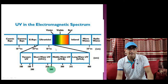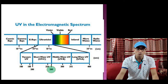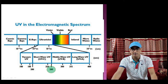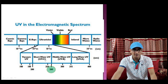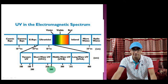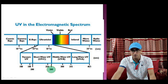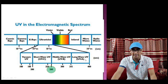In the electromagnetic spectrum, UV lies from 100 to 400 nanometer range. From 100 to 200 is called vacuum UV. From 200 nanometer to 280 nanometer is called short wave UV, UVC. From 280 to 315 nanometer is middle wave UV, also called UVB. From 315 to 400 nanometer range is long wave UV, UVA.